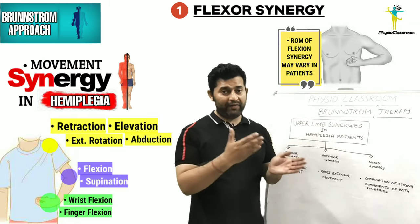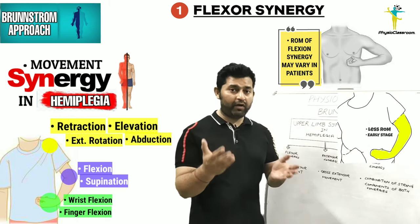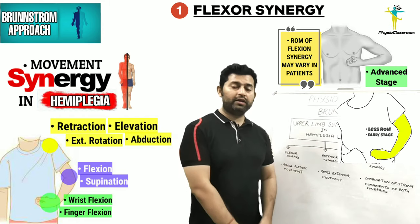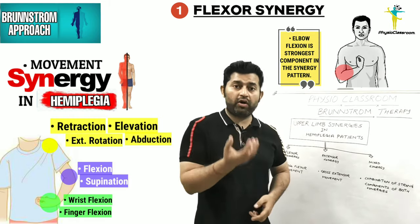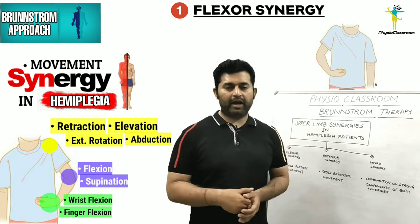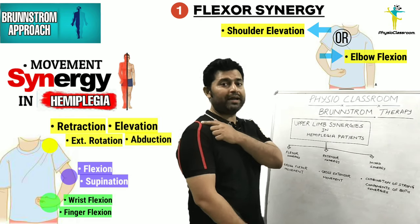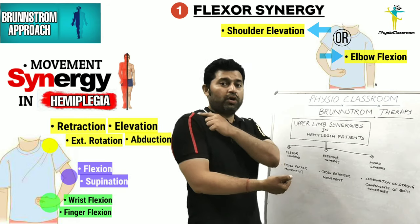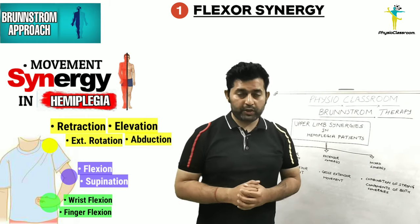Important points regarding the upper limb flexor synergy: first, there is often variability in the range of motion — a patient just coming out of the flaccid phase may only initiate the movement, while a patient in the advanced stage of spasticity may show the complete range. Second, elbow flexion is the strongest component of the upper limb flexor synergy. Third, the flexor synergy is typically initiated by either elbow flexion or shoulder elevation, with the rest of the synergy muscles following their activation.